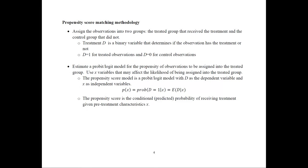The propensity score model is essentially a probit model. What we want to get from it are predicted probabilities P-hat — the conditional probabilities of receiving treatment given pre-treatment characteristics X. Note that all X variables must be pre-treatment characteristics, since we want to know what influences individuals being assigned to a program.